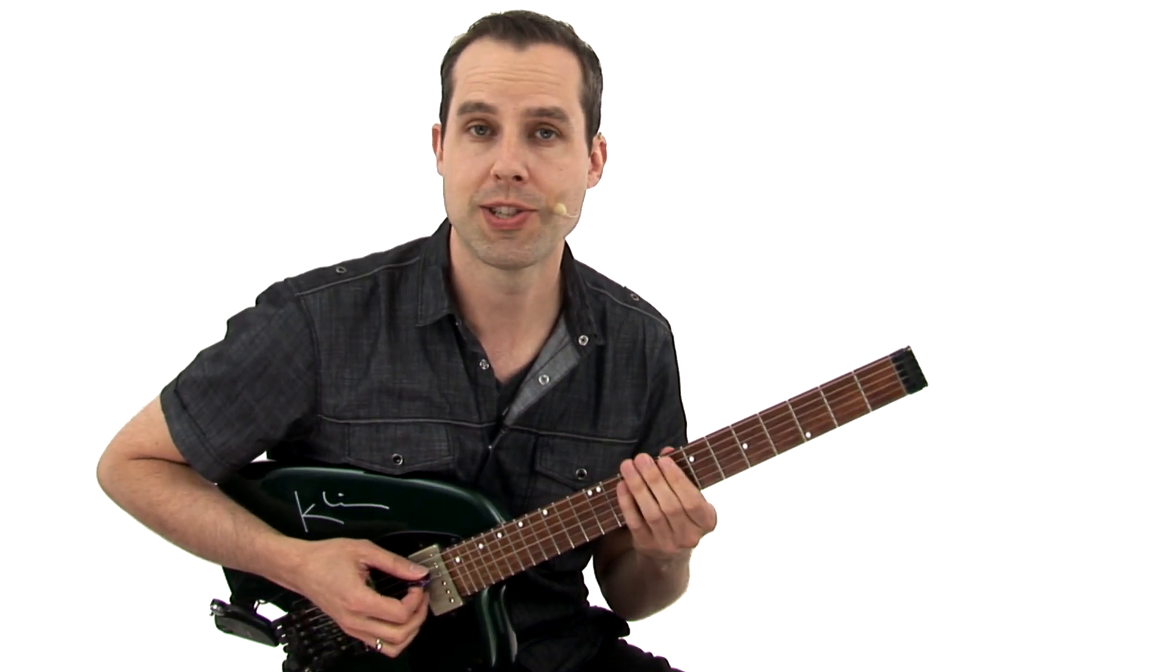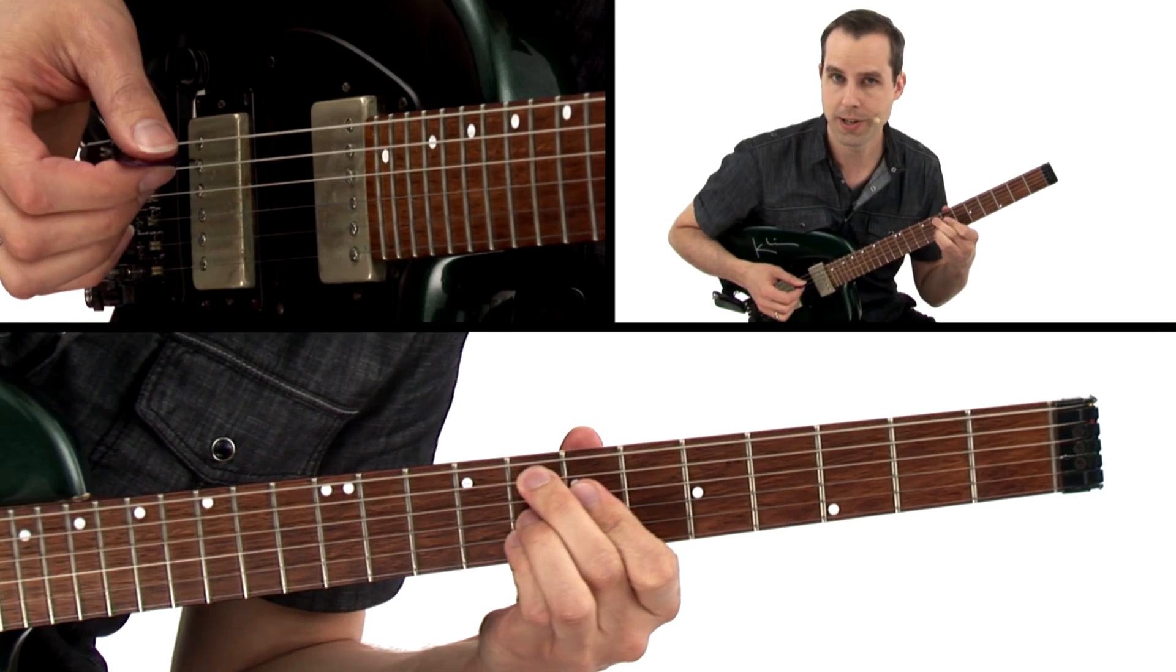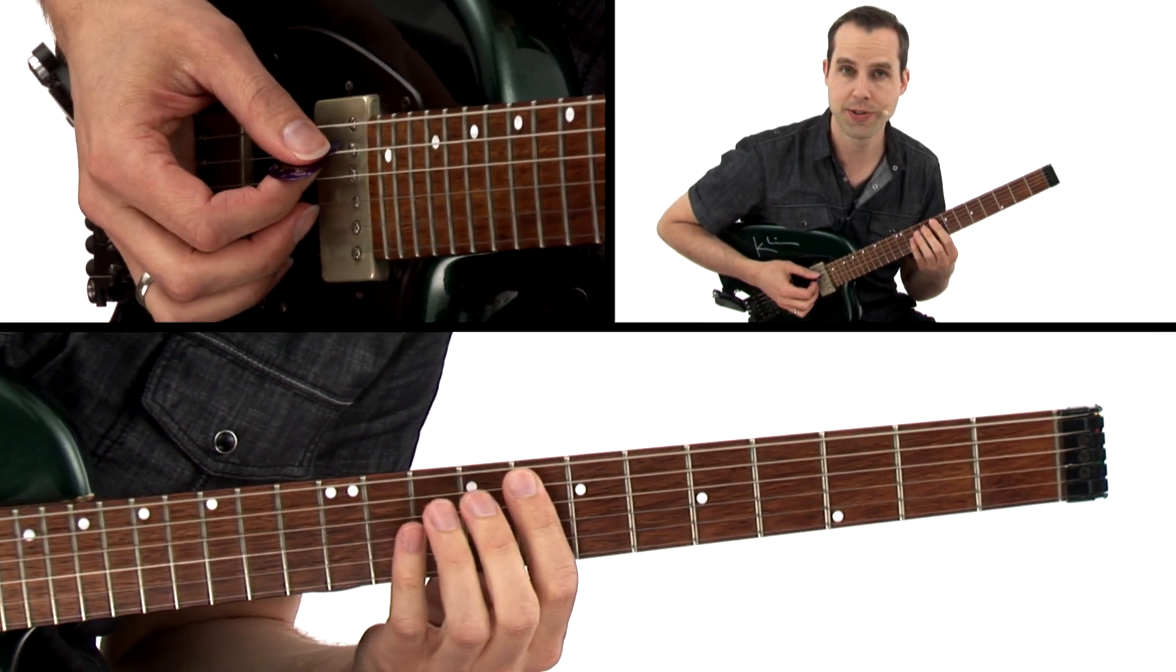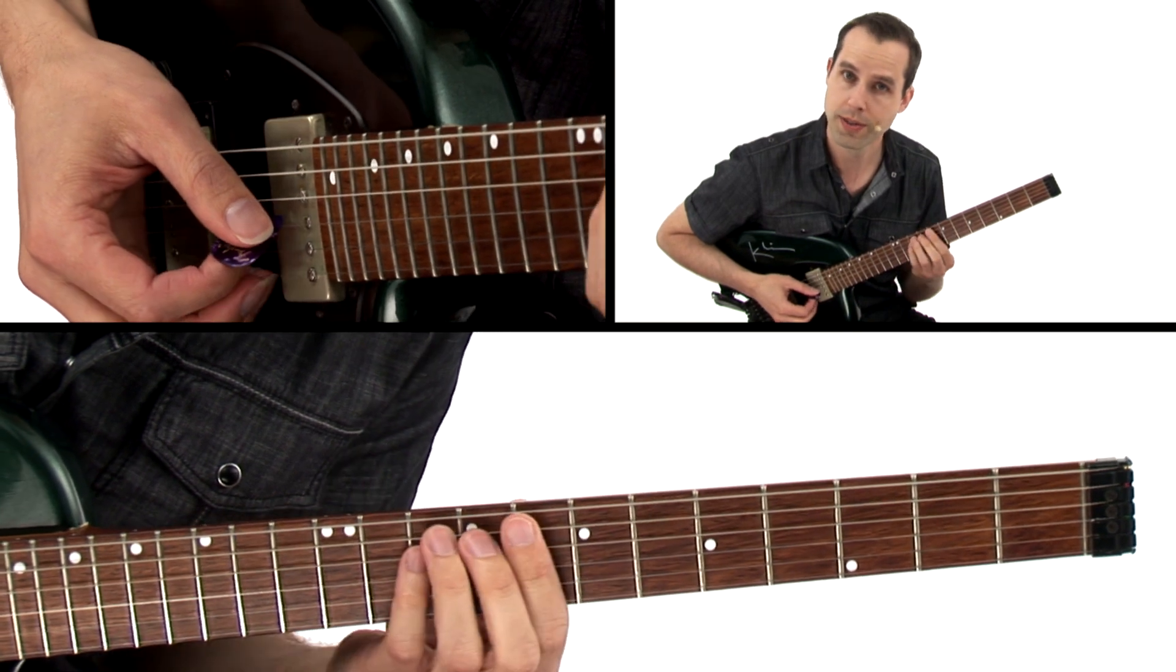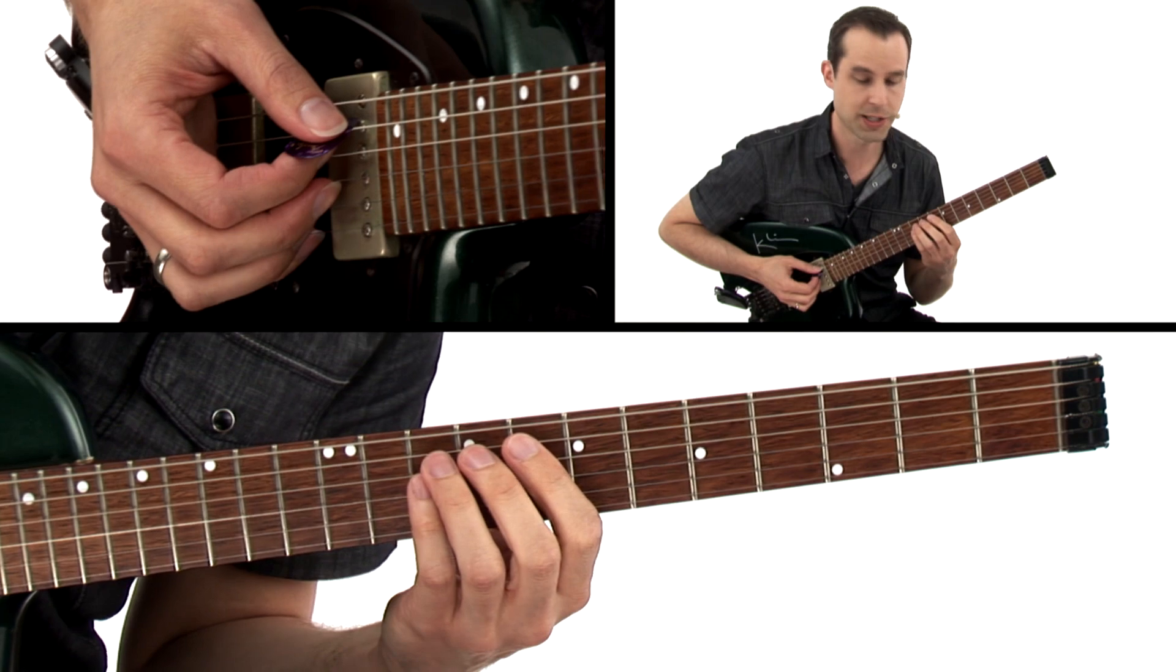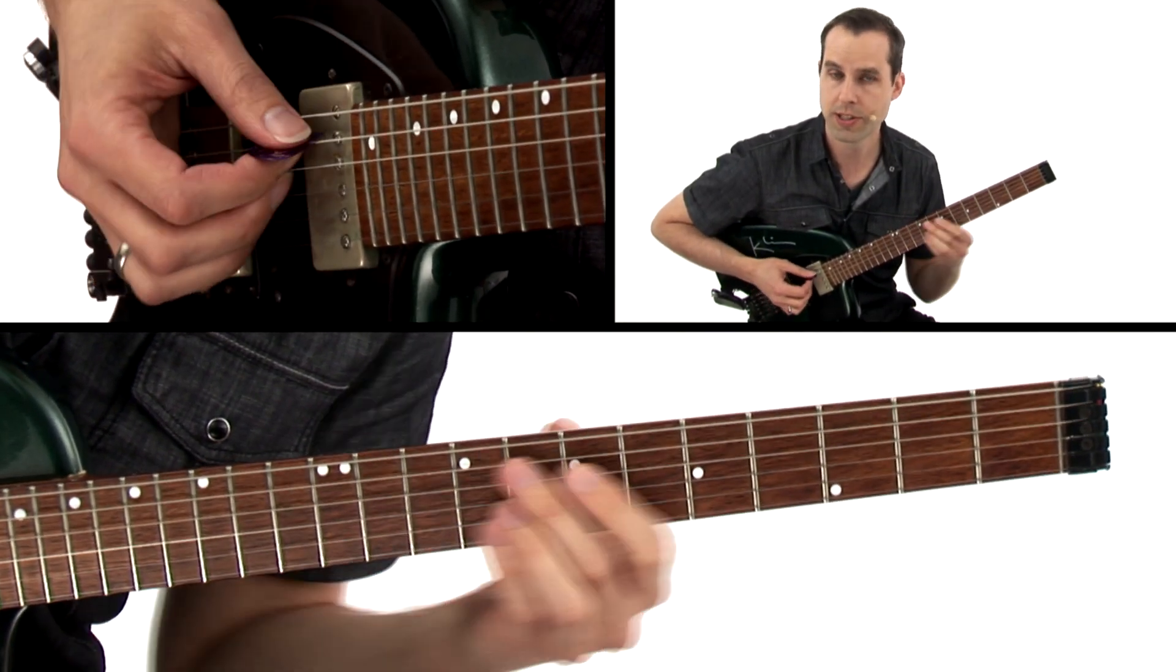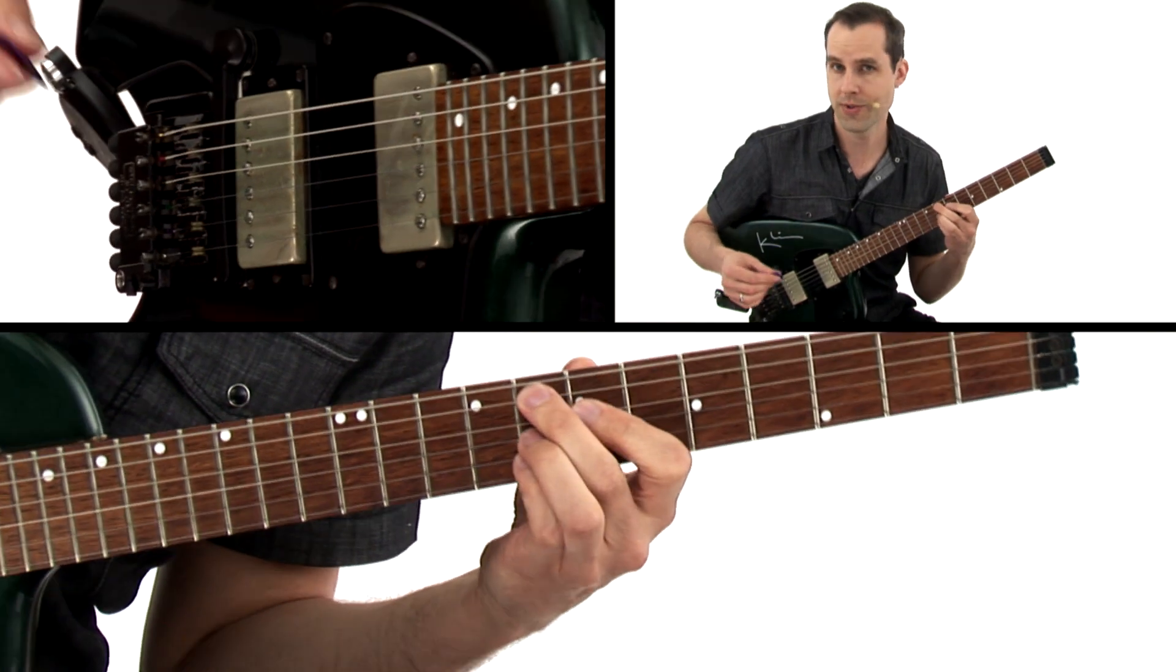Now, 2-1-2-1 arpeggios can be started on any string, so if we're looking at the F9 here, we could start one on the 5th string. You just go two notes, one on the next string, two notes, one. So here's a nice one for F7. That's a great sound for the F9 chord.